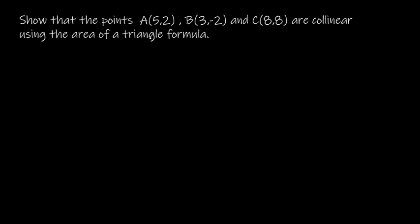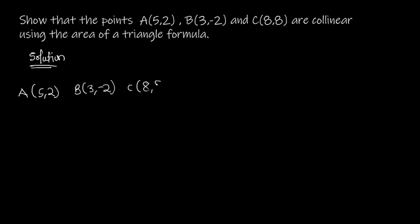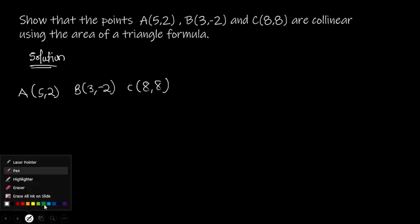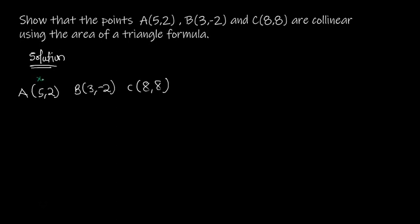We are to show that the points A, B, and C are collinear using the area of a triangle formula. So let's write down our solution. I have A(5, 2), B(3, -2), and C(8, 8). I'll label the coordinates: x1 = 5, y1 = 2, x2 = 3, y2 = -2, x3 = 8, y3 = 8.